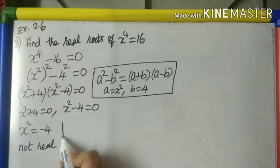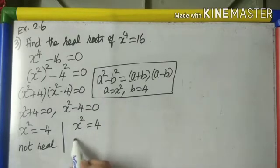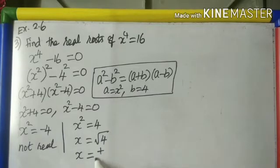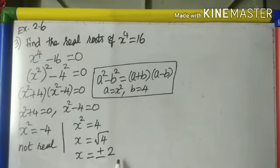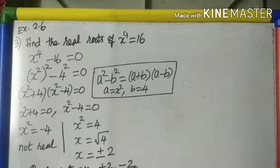Going to the second factor: x² = 4, so x = ±√4. Remember, whenever a square root is taken, put plus or minus. So x = ±2. The question asks for real roots only, and the answer is x = +2 and x = -2.